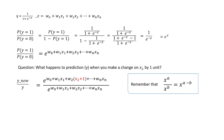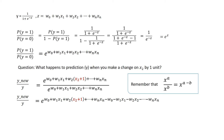Remember the rule for the quotient of exponentials with the same base: if we take the quotient of two exponentials with the same base, we simply subtract the exponents. Let's apply this rule to the y_new term over the y term. The power term includes plus and minus w0, plus and minus w1 times x1, and plus and minus wn times xn. The sum of those plus and minus terms is 0 and we can simplify.